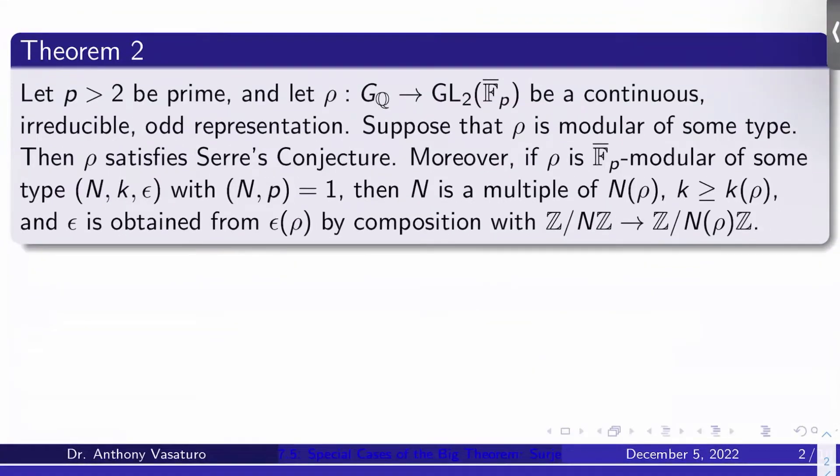So let's recall where we're at. Theorem 2 was: let p be a prime bigger than 2 and let rho from GQ to GL2 of Fp bar be a continuous irreducible odd representation. Suppose that rho is modular of some type, then rho satisfies Serre's conjecture, meaning it's modular of the type prescribed by Serre.